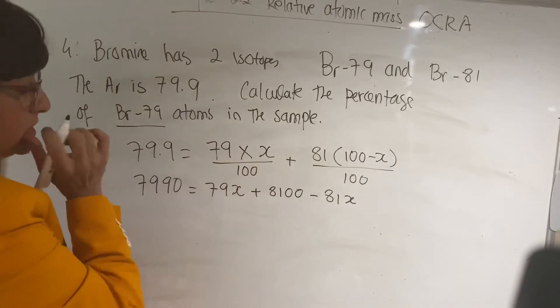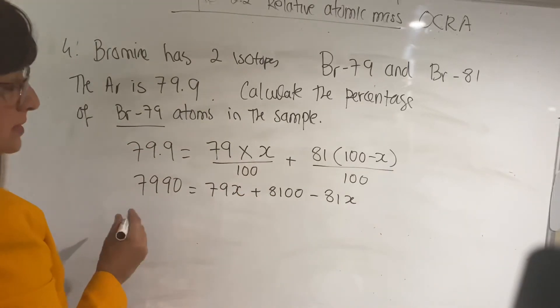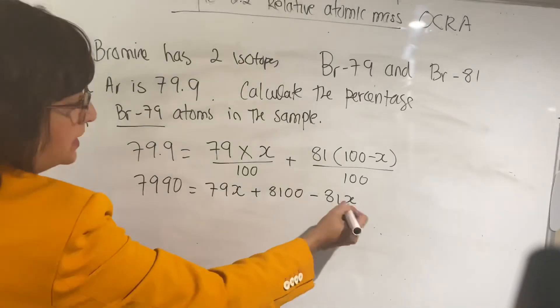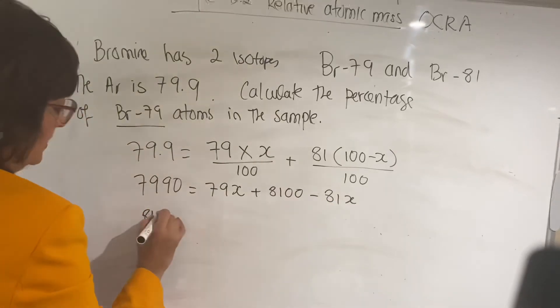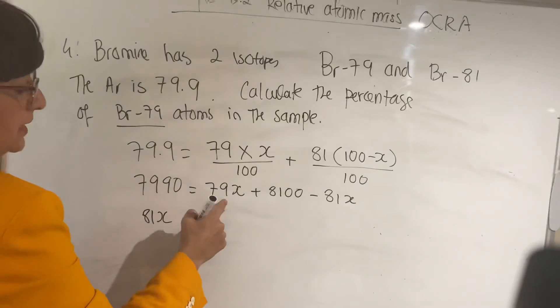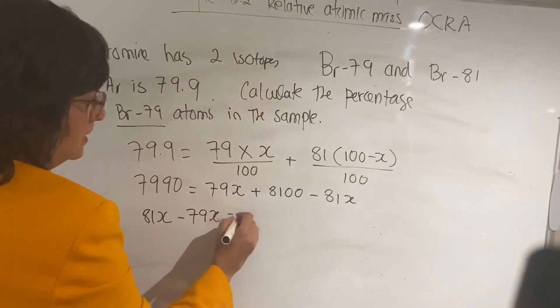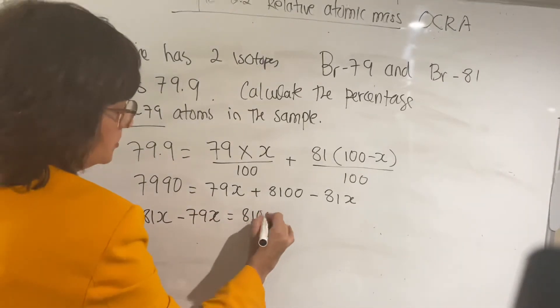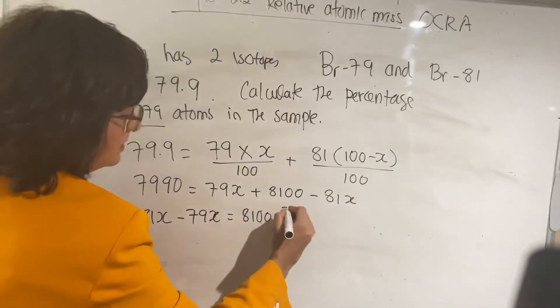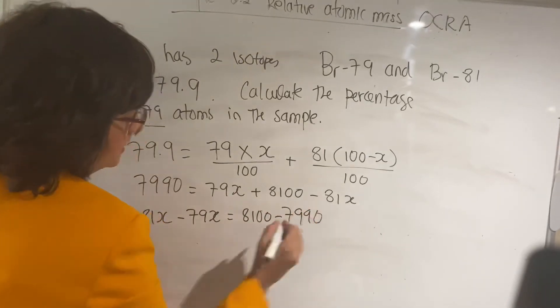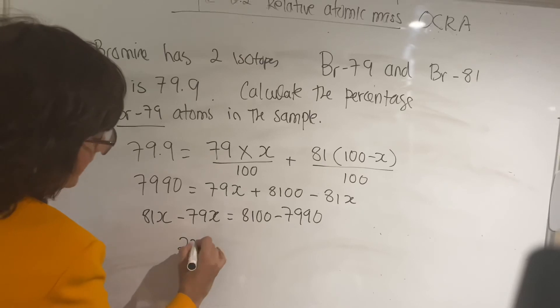So if you multiply 79.9 times 100, it will give you 7,990. It equals to 79x plus 8,100 minus 81x. You can now rearrange this equation by bringing them around this side, so you put the minus 81x becomes 81x and 79x becomes minus 79x.